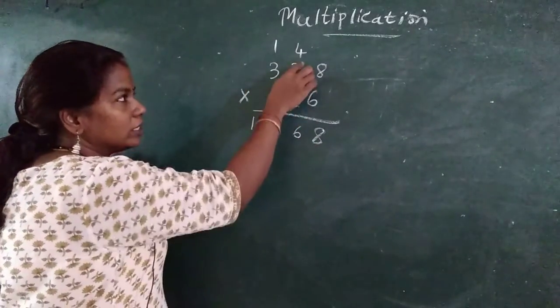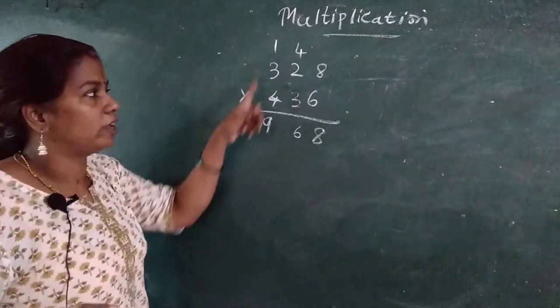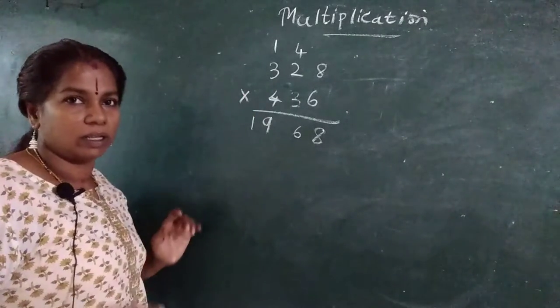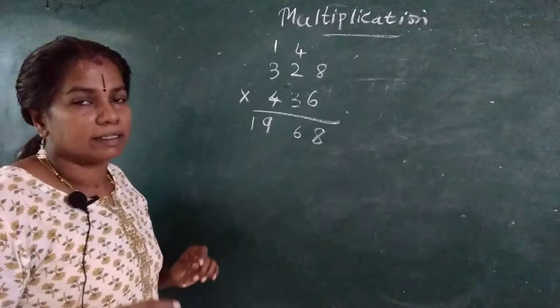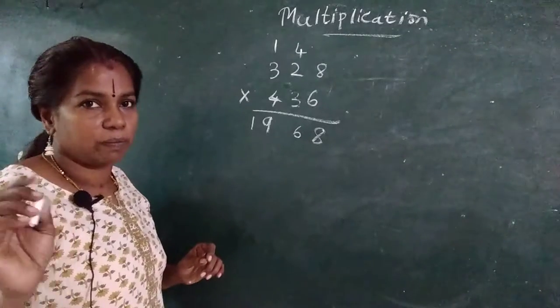See, I have written units in units place, tens in tens place, hundreds in hundreds place, then 1000. Writing in proper order is important. You have to put the numbers in the proper place.